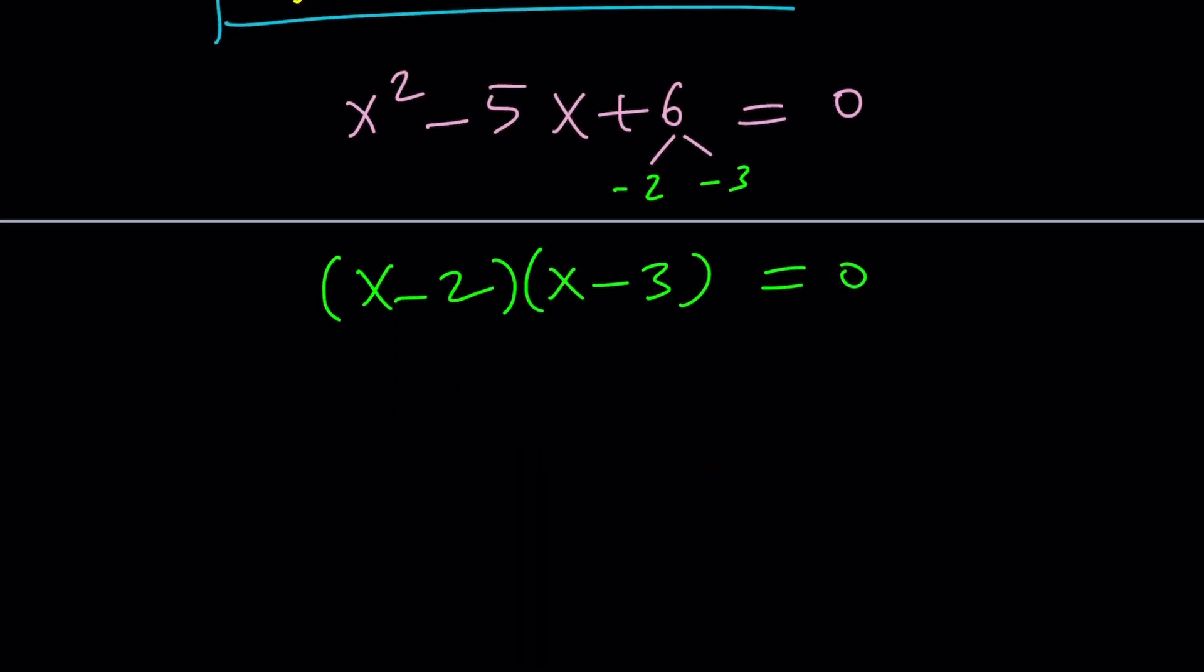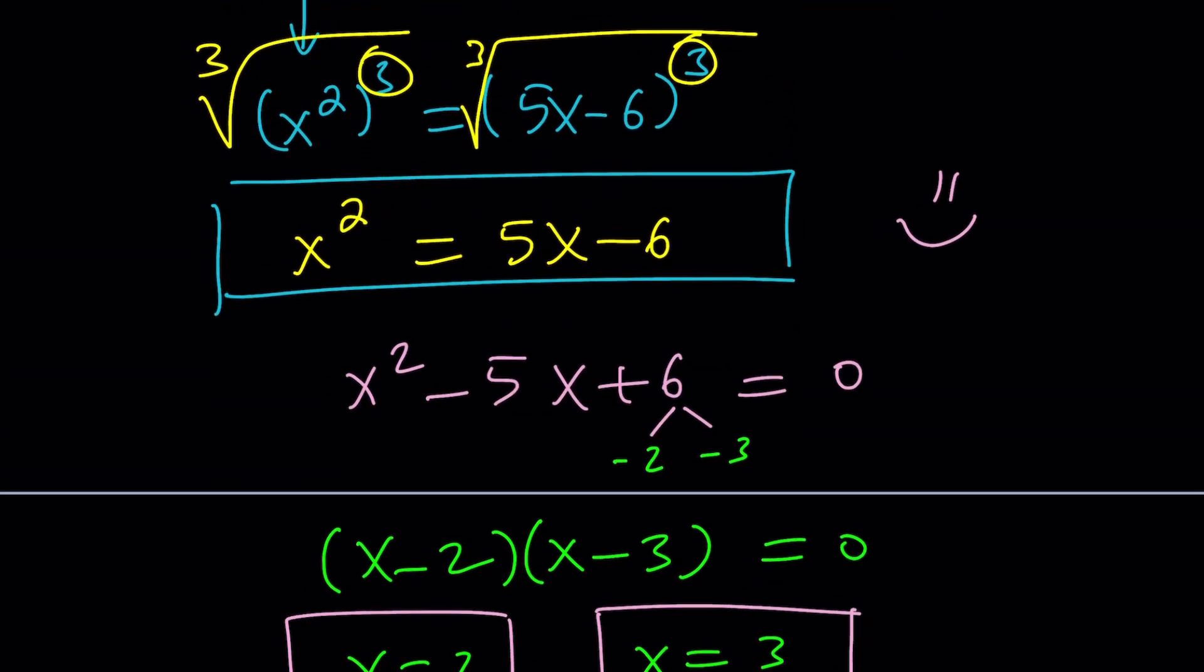But wait a minute, isn't this like hexic and we only found two solutions? Why only two solutions? Because the other solutions are not real. I don't want to say complex because all the solutions are complex. Everything you know, right? Everything you know and everything you don't know. Complex numbers include real numbers. That's why I said the other solutions are not real. How do we find them? Is there a way to find them? Good question.